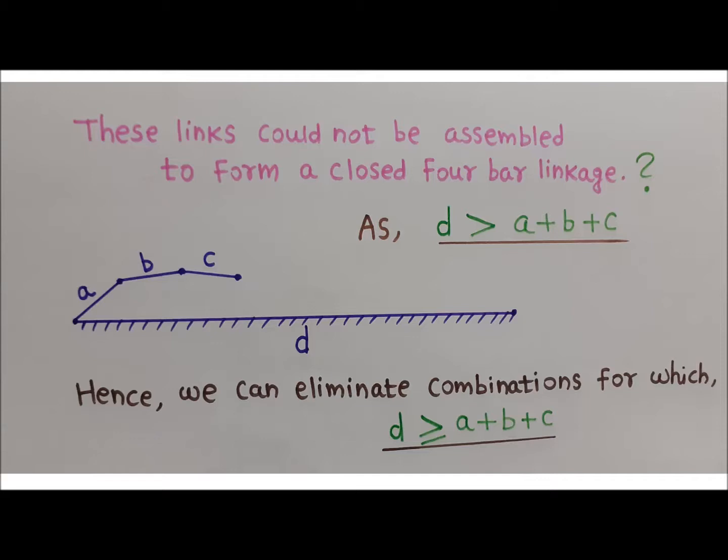Even if D equals A + B + C, we can have a joint between links C and D, but in that case every link of length A, B, and C will lie along link D, making the mechanism stationary. Hence, we eliminate combinations where D is greater than or equal to A + B + C.